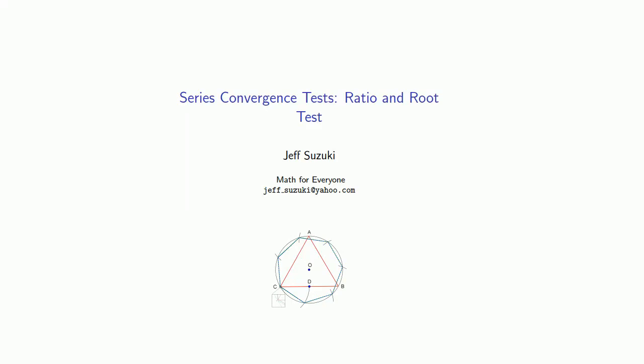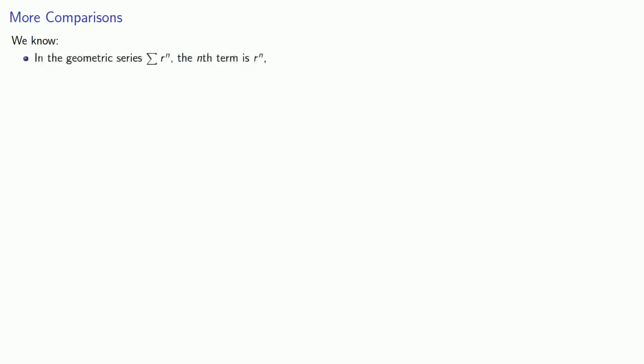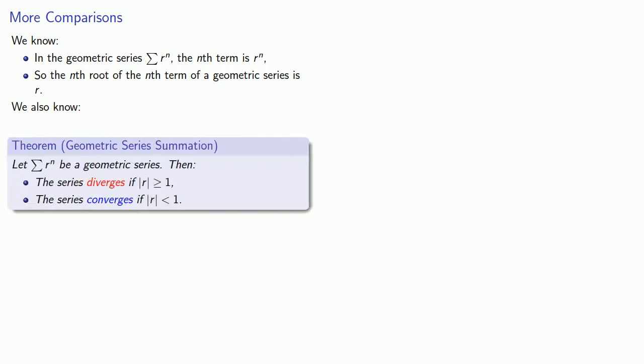Two of the more important convergence tests are based on geometric series. In the geometric series r to the power n, the n-th term is r to the n. So the n-th root of the n-th term of a geometric series is r. This is most useful because we know when a geometric series converges: it diverges if the absolute value of r is greater than or equal to 1, and converges if the absolute value of r is less than 1.